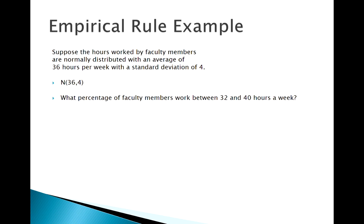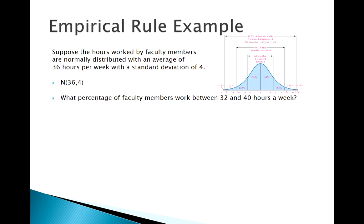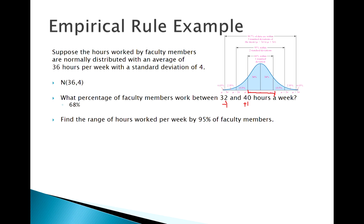...between 32 and 40 hours a week? Recall our empirical rule. The mean is 36, so 32 is minus 1 standard deviation and 40 is plus 1 standard deviation. That's asking what percentage falls between negative 1 and positive 1 standard deviation — we know that is 68%. We can also flip that: 95% corresponds to two standard deviations, so 36 minus 8 gives 28 and 36 plus 8 gives 44.